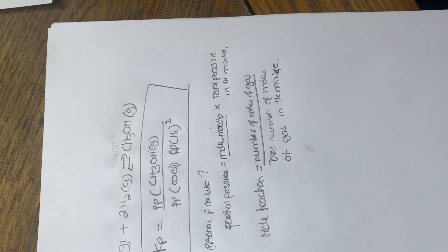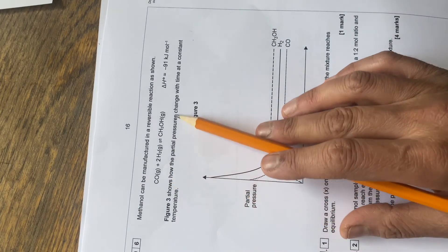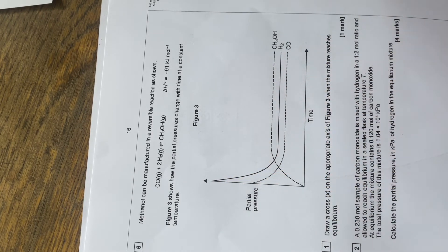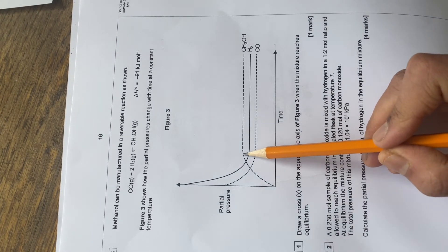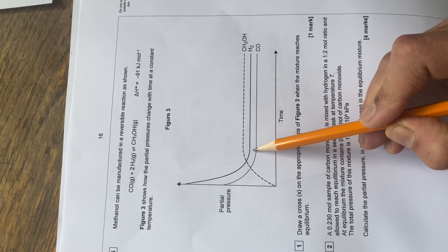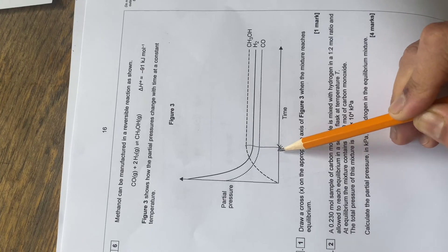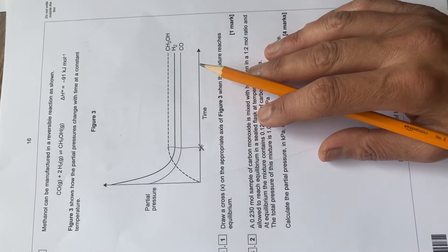Now we'll solve the question from the 2020 paper. It shows a graph of partial pressure changing with time. The question says: draw a cross on figure three when the mixture reaches equilibrium. Equilibrium is where one line is still going up and the other is still going down, but they meet at the point where everything becomes a straight line — constant. All reactants and products are at constant concentration at equilibrium.